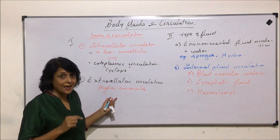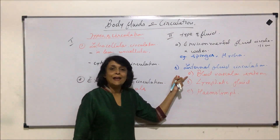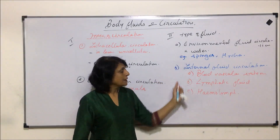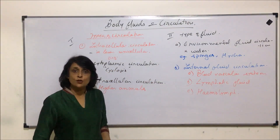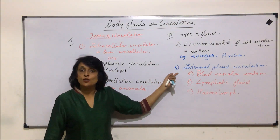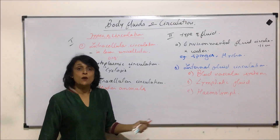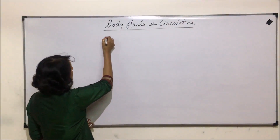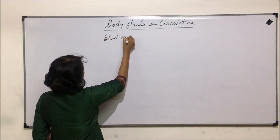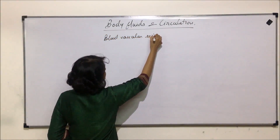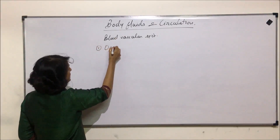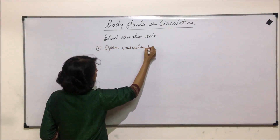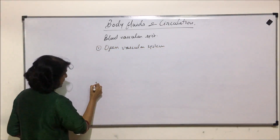So extracellular circulation means it is taking place outside the cells but between the tissues, and that could be blood moving between the tissues, or lymph, or even hemolymph. Now, as we have come to the blood vascular system, we will see the classification of whether this blood vascular system is an open type or a closed type.